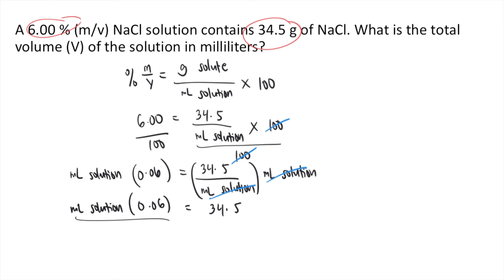Next, you divide both sides of the equation by 0.06. So 0.06 cancels on the left side. So what remains on the left side is mL of solution.